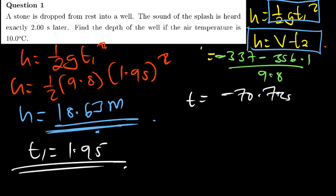The key point to note is that the 2 seconds is the total time, meaning T1 + T2 = 2. You first have to find T1 using the free-fall formula that includes G, because the stone was falling under the influence of gravity. That is the solution to this first question.